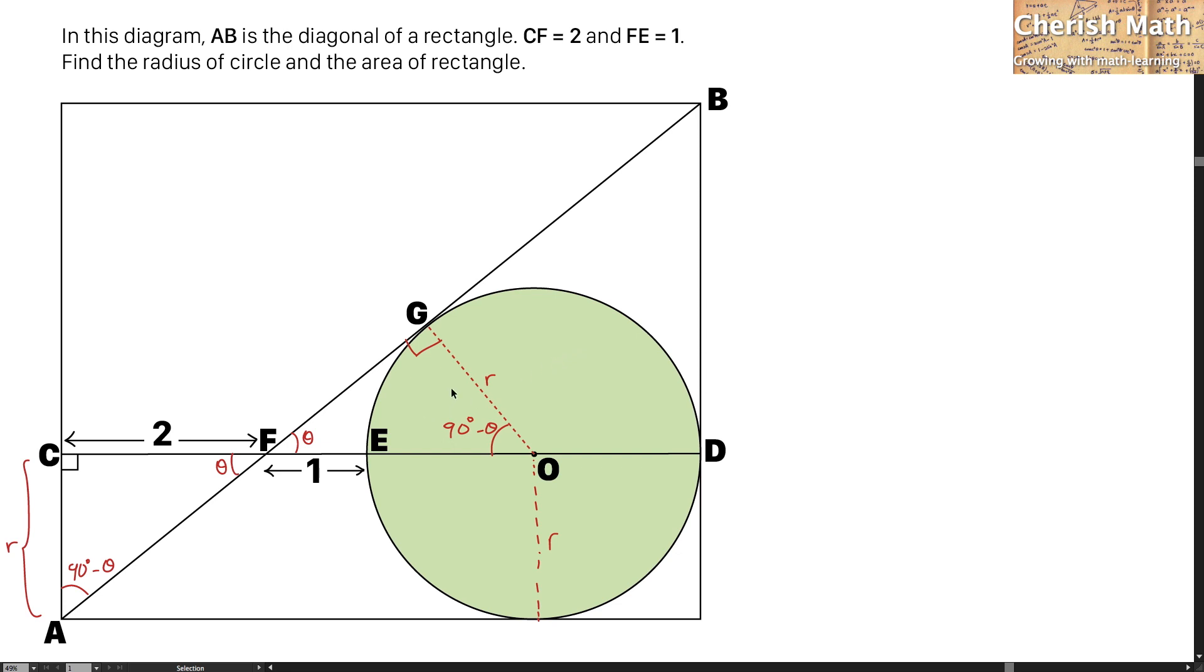Now, notice that for these two triangles each part of the angle is the same. While for the length OG and AC is the same measurement that I denote with the letter R.